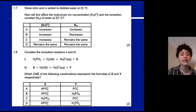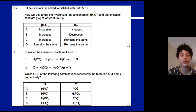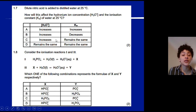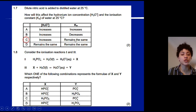Question 1.7: dilute nitric acid is added to distilled water at 25°C. Nitric acid is a strong acid and ionises completely, producing a high concentration of hydronium ions — so H₃O⁺ concentration increases. However, because the temperature stays the same, the ionisation constant of water, Kw, remains constant. The answer is D.